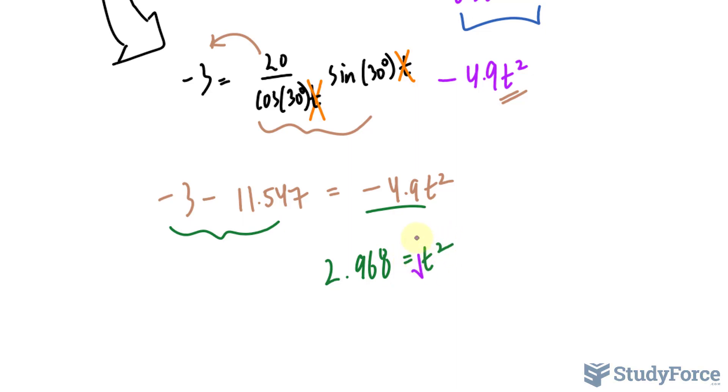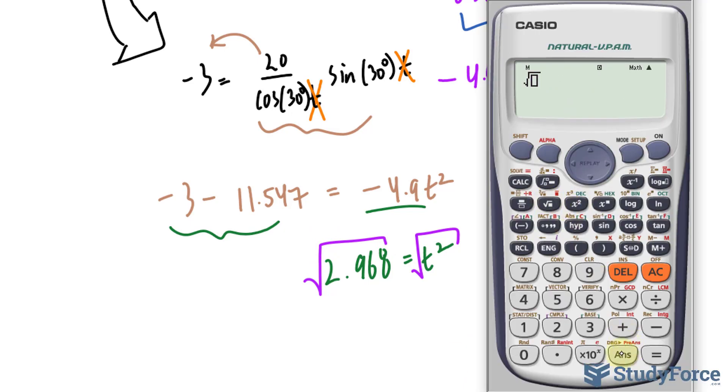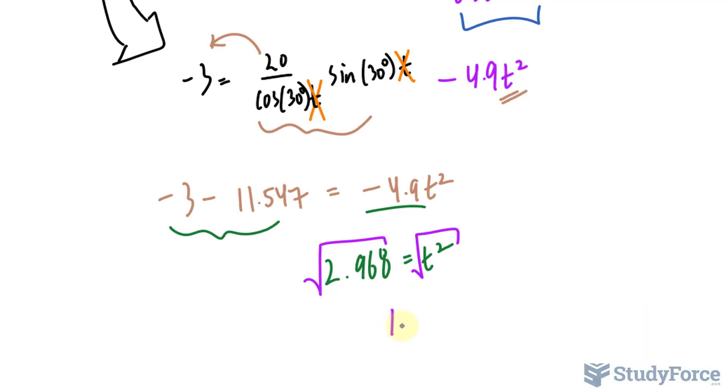To get rid of this squared value, we square root both sides. So we square root that. And this should give us a time value. Actually two time values given that t is squared. You should get negative 1.72 seconds and positive 1.72 seconds.